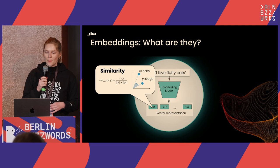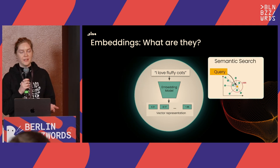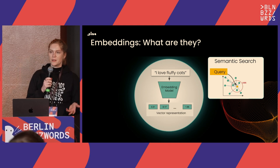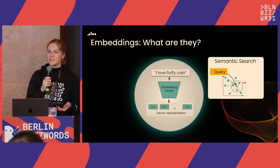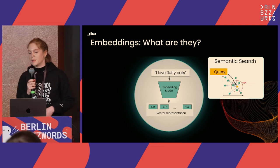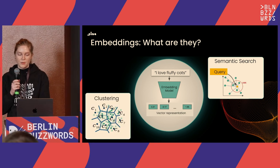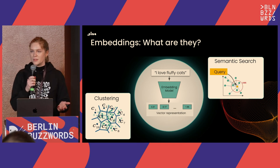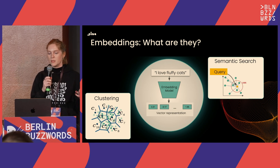You might use something like cosine similarity to compare texts to one another. This is really useful for downstream tasks like semantic search, where you encode your query and compare it to your encoded dataset to return similar documents. Or you might use it for clustering, where on an unlabeled dataset you can find centroids that represent some subspace within your data.